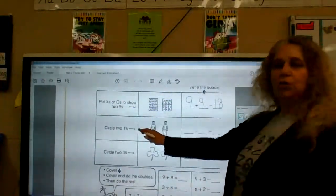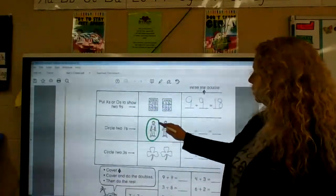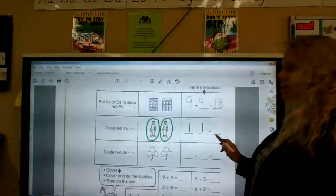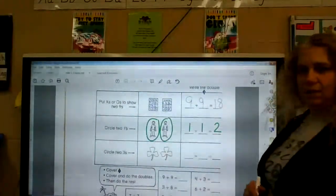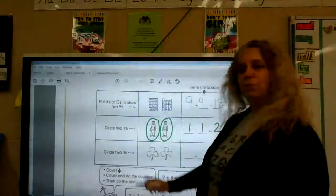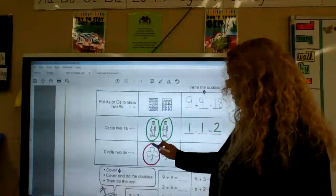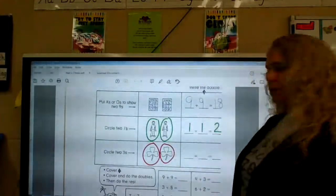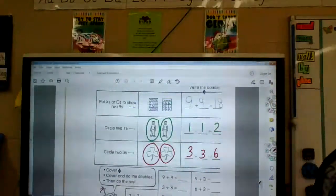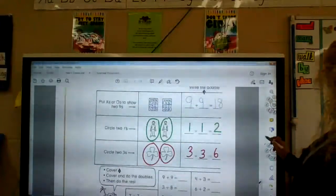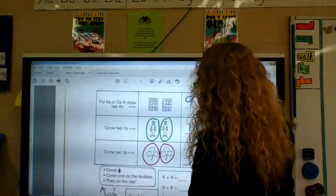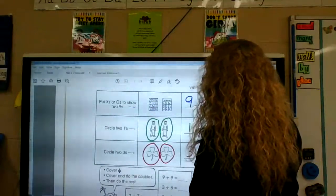For the people, it says circle two ones. Here's one. And here is one. So, one plus one equals two. That's our easiest double, isn't it? Circle two threes. This is a three. And this is a three. Three plus three equals six. I'm going to make these fatter so you can see it a little better.